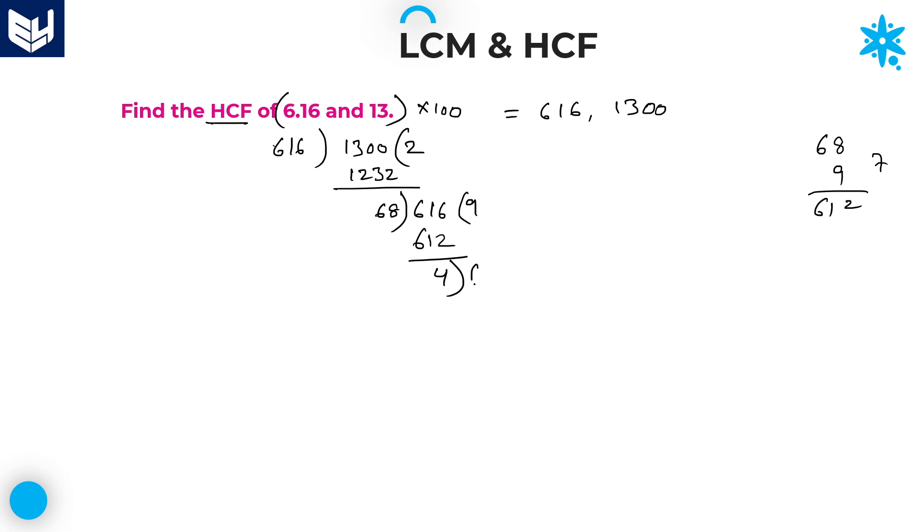After that, again divide previous divisor 68 with this remainder. Here it is exactly divisible. 17 times. 4 into 17, 68. The remainder is zero. Therefore, HCF of 616 and 1300 which is equal to 4.